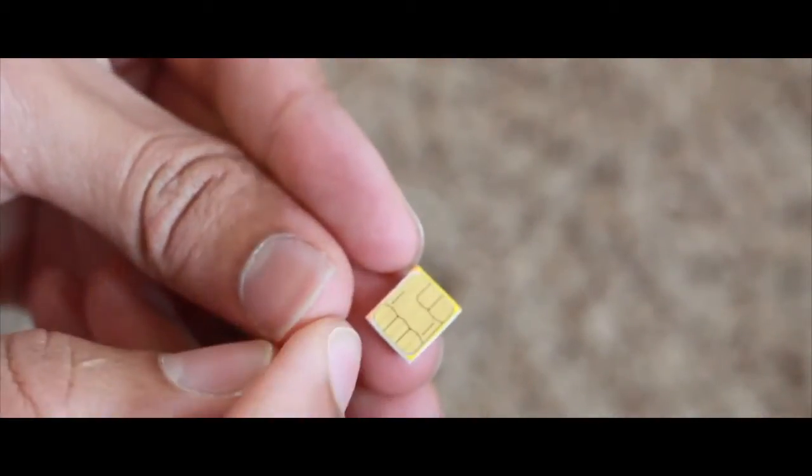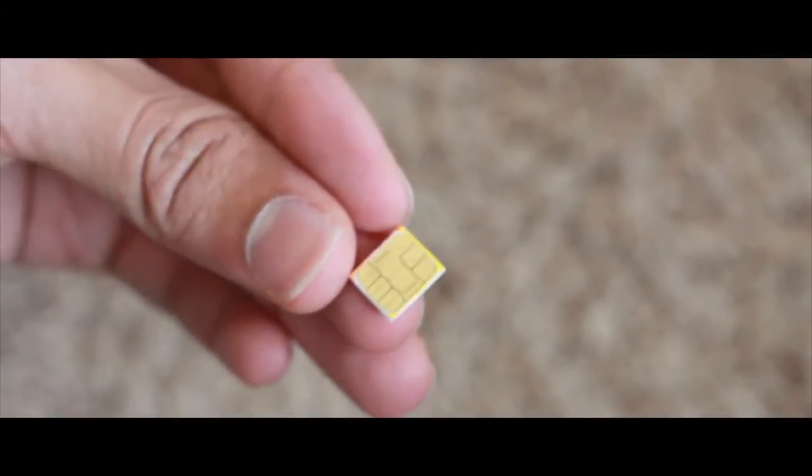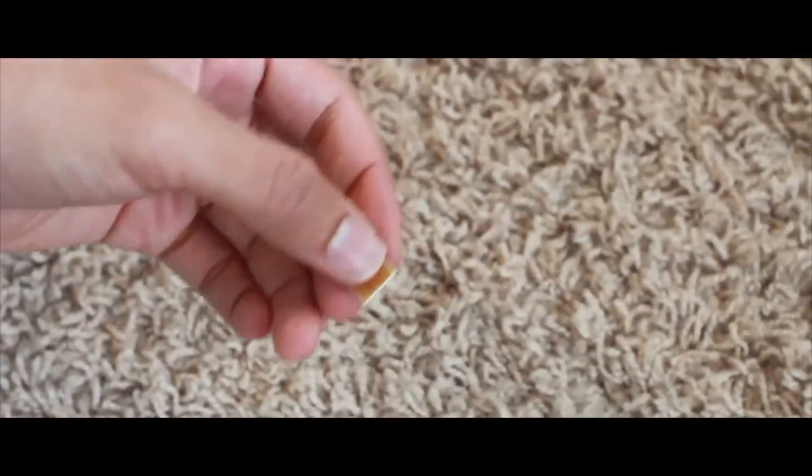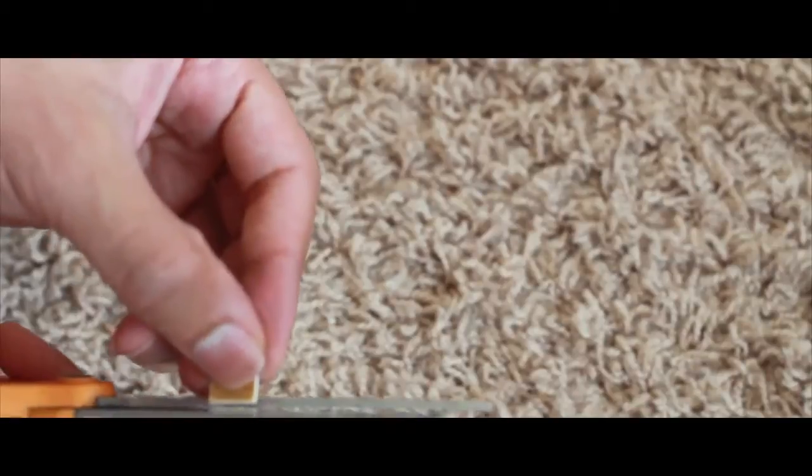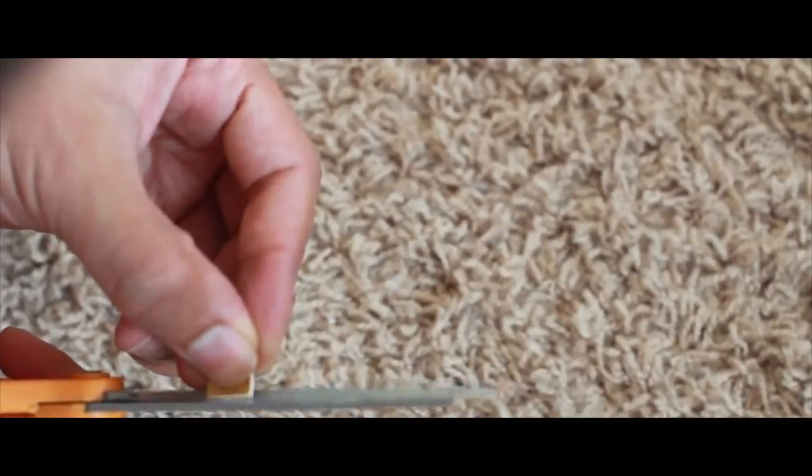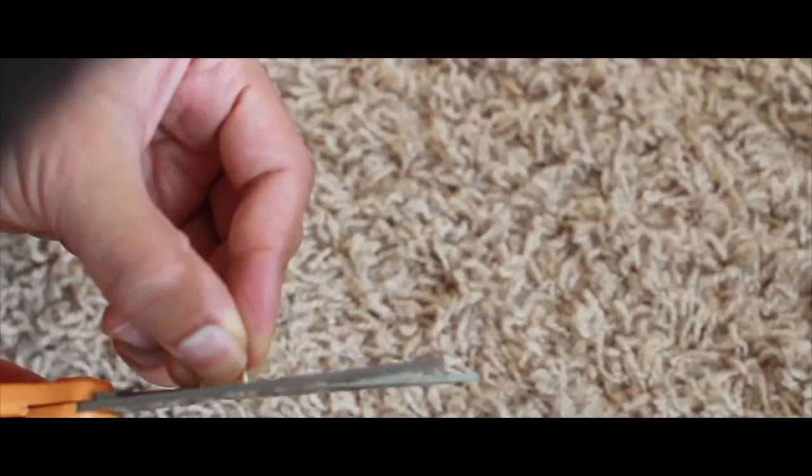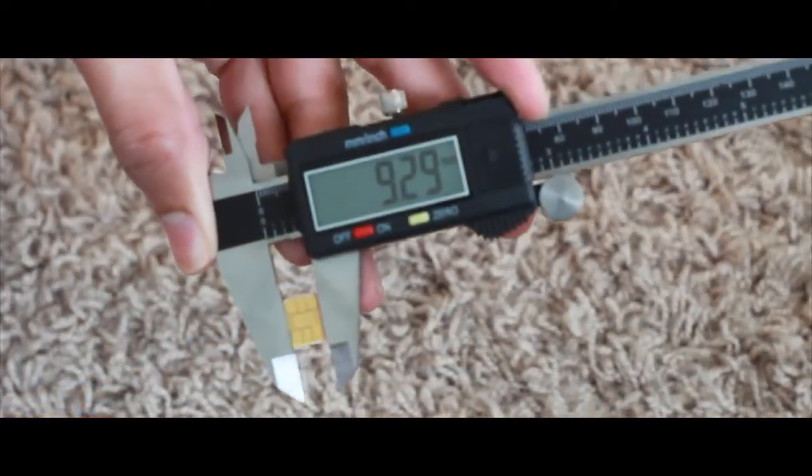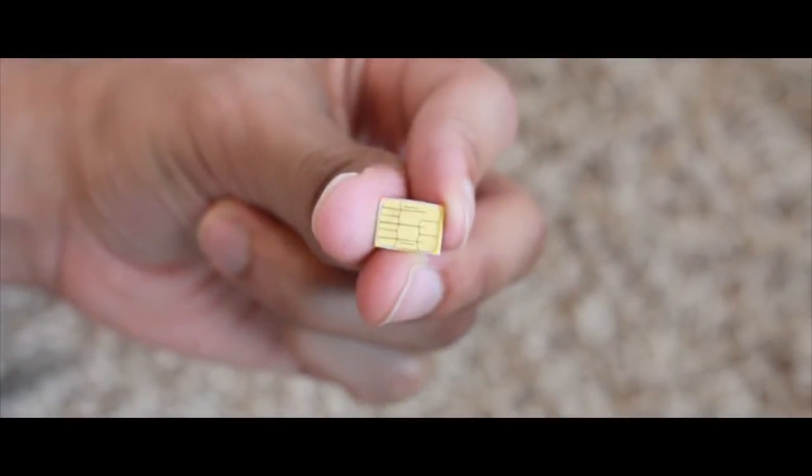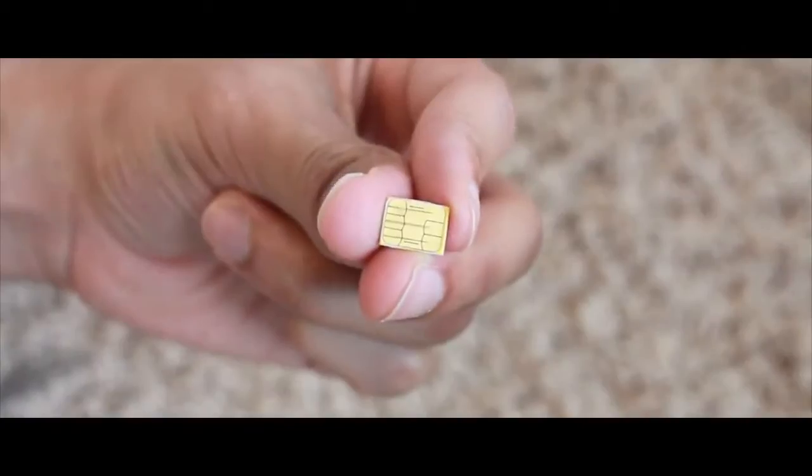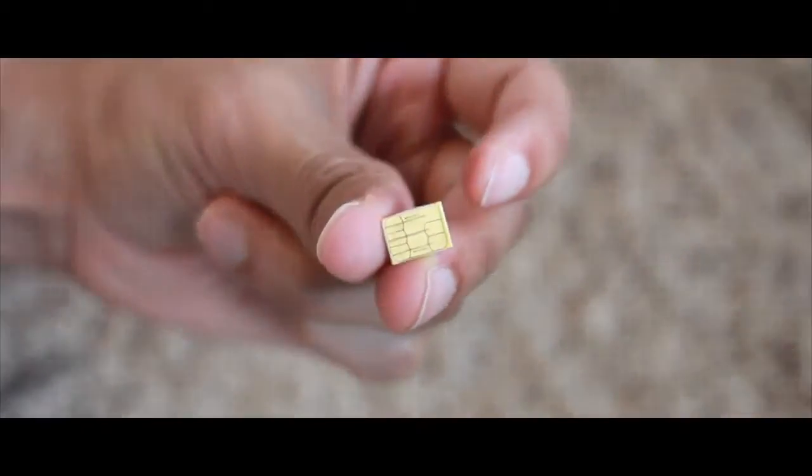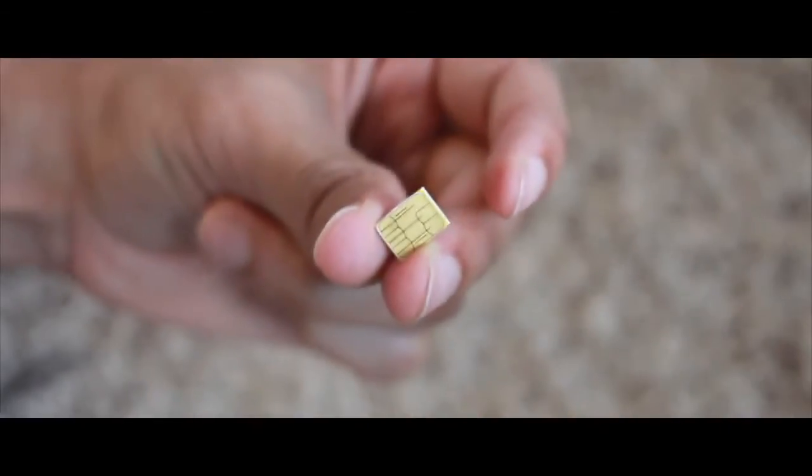You're just going to have to be really careful and trim that very carefully with those scissors. Make sure you use a pair of sharp scissors. Okay, now we're down to about 9.28. That's really close. I don't think I can do any more actual cutting on our micro SIM here because it'll probably cut into the chip itself.